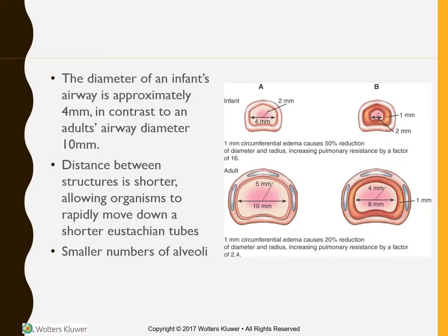The diameter of an infant's airway is approximately four millimeters in contrast to the adult's airway, which is about ten millimeters. That airway opening is definitely much smaller in an infant and child versus the adult. The airway lumen is smaller in infants and children than in adults. So when we see edema, mucus, or bronchospasms, that air passage is greatly diminished, which results in increased resistance to airflow, causing an increased work of breathing.